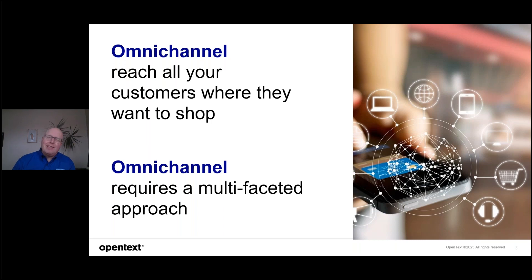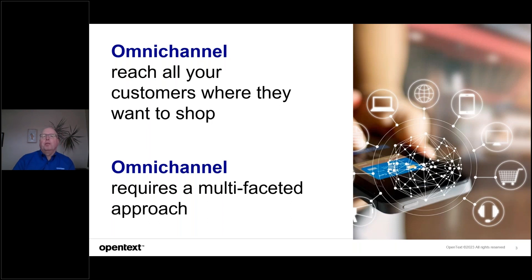Looking at it by age: Gen Z, those 11 to 28 in 2023, 37% shop in-store, 36% hybrid, and 28% online. Millennials, 29 to 43-year-olds, 38% in-store, 30% hybrid, and 32% online. Boomers, 59 to 77, 60% in-store, 18% hybrid, 22% online. A lot of numbers, but what this confirms is your customers shop in a variety of ways, and this is why you need an omnichannel strategy to reach all your consumers where they want to shop.